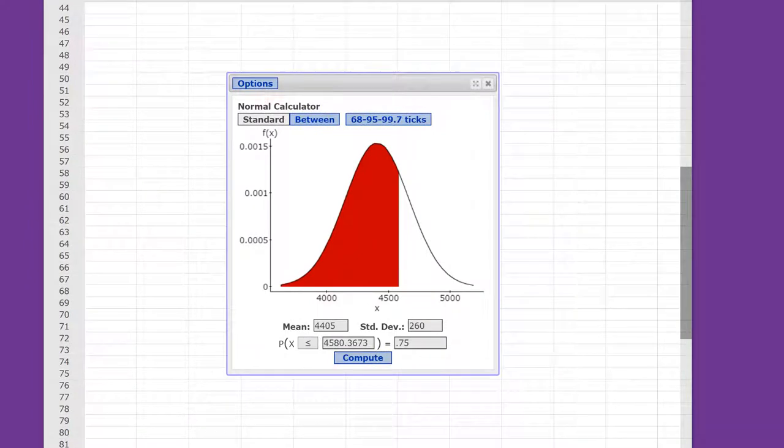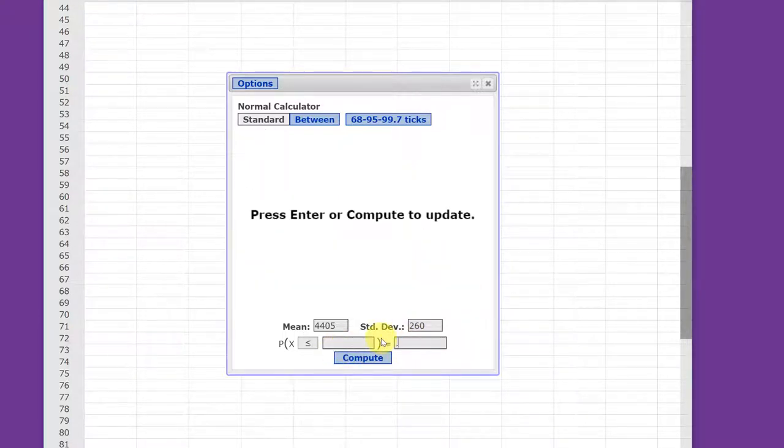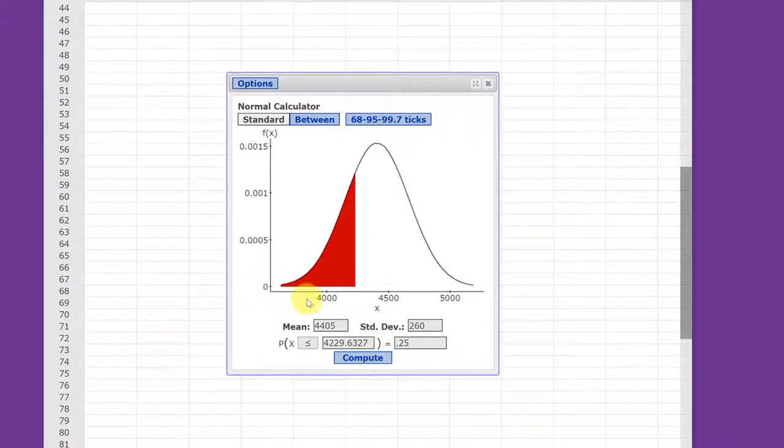I'm going to use an online calculator to help you remember some things about the normal distribution. In our case, we've got a mean of 4405 and a standard deviation of 260. If we know a probability, we can find the x value associated with that probability. Here I put in a probability of 0.75 and it says the x that matches is 4580. If we put in 25%, the x is about 4230.